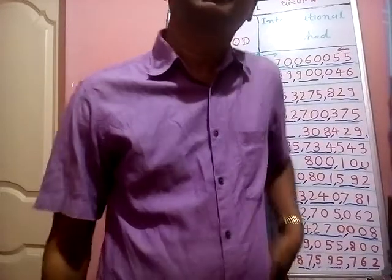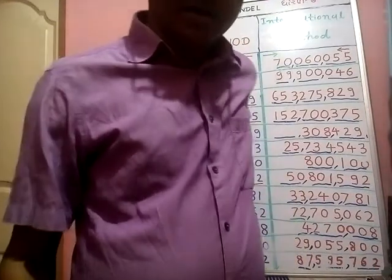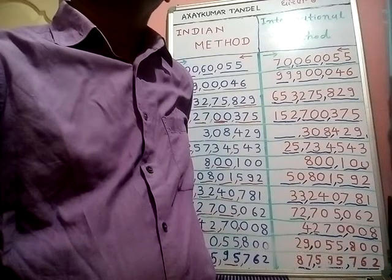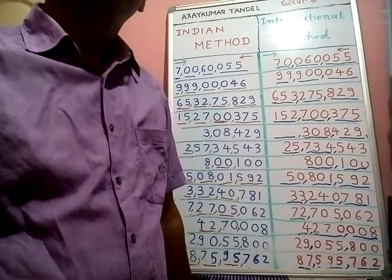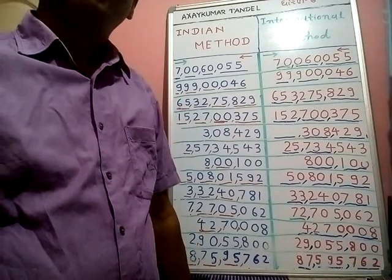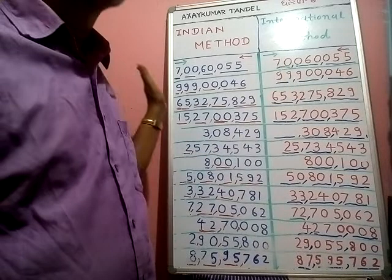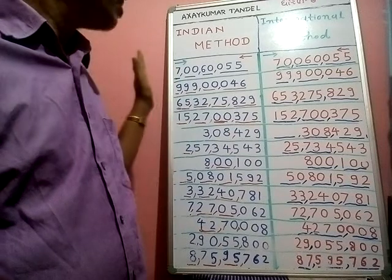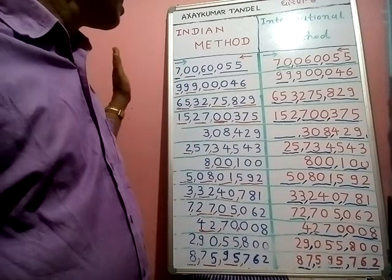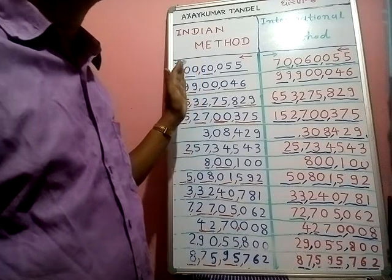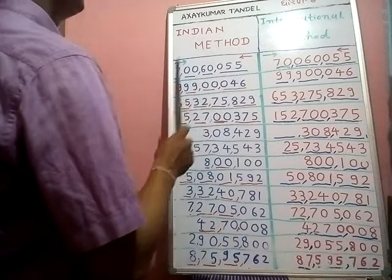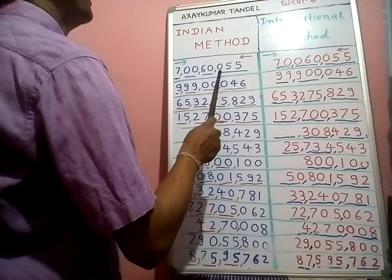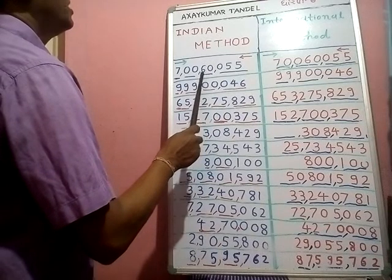Hello friends, welcome to my channel. Now we are going to study how to read numbers in the Indian method and international method. First we will decide the place value from right to left, and then learn how to read from left to right. Now we start the Indian method: ones, tens, hundreds, thousands, ten thousands, lakhs, ten lakhs, crores.